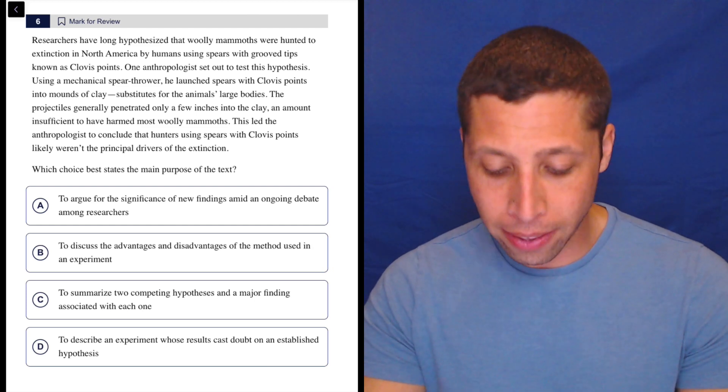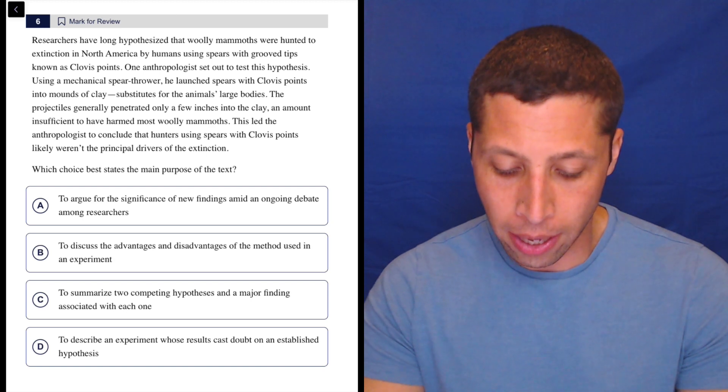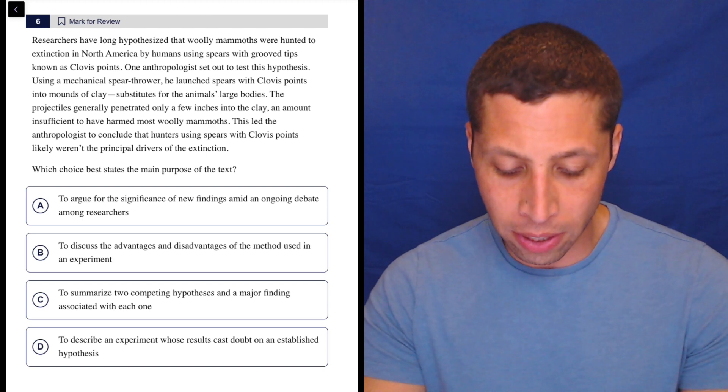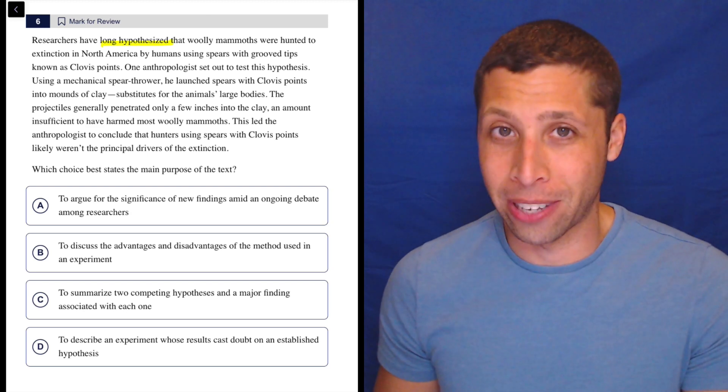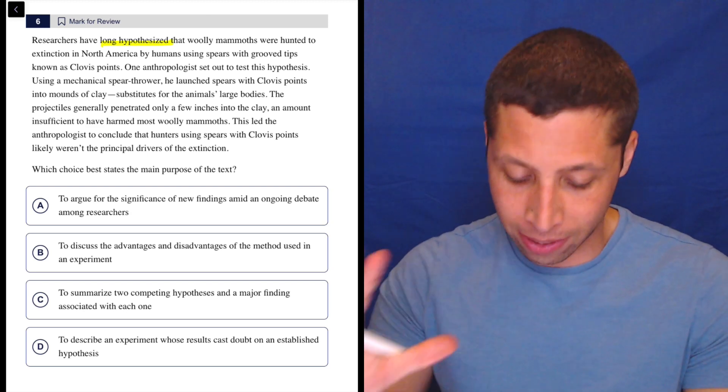Researchers have long hypothesized that woolly mammoths were hunted to extinction in North America by humans using spears with grooved tips known as Clovis points. So long hypothesized, right? We've got something that's been an idea for a long time. Let's continue.